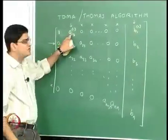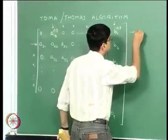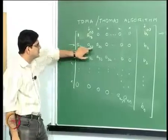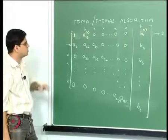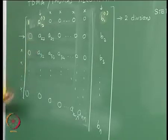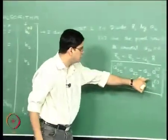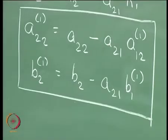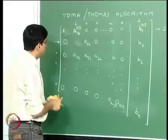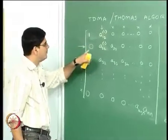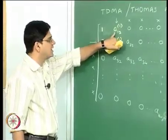This involves one division and a second division, so Step 1 involves two divisions. The first part involves two divisions. What we do next is this particular row minus A21 multiplied by this row. By doing that, this particular element gets converted to 0 — we know it will become 0, so this computation is not done. A22 is going to be equal to A22 minus this particular product, so there is one multiplication and one addition/subtraction step, converting A22 into A22_1. A22_1 is nothing but A22 minus A21 multiplied by A12_1.